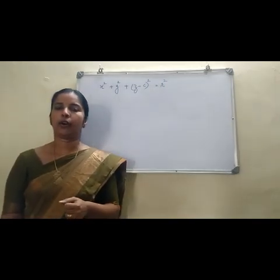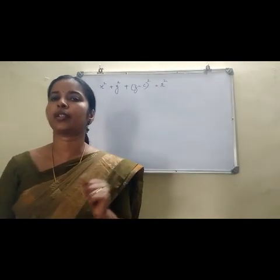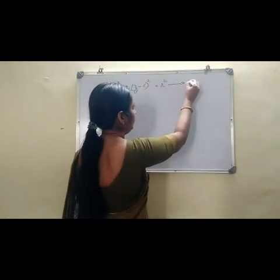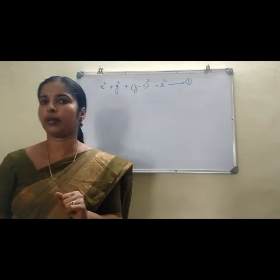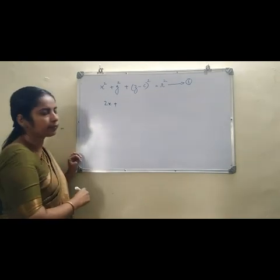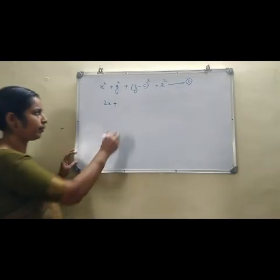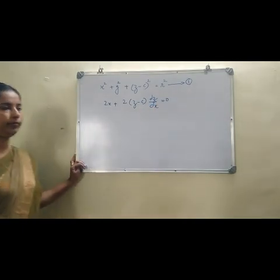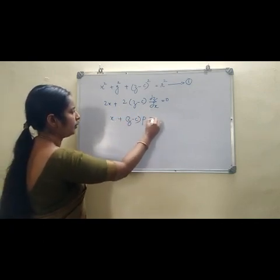We are forming the differential equation of such spheres. Our assumption is that z is a function of x and y, so here it is partial differentiation. Differentiating equation 1 partially with respect to x — keeping y as a constant — gives: derivative of x² is 2x, derivative of y² is 0, derivative of (z − c)² is 2(z − c) · dou z by dou x = 0. Removing the 2: x + (z − c)p = 0.